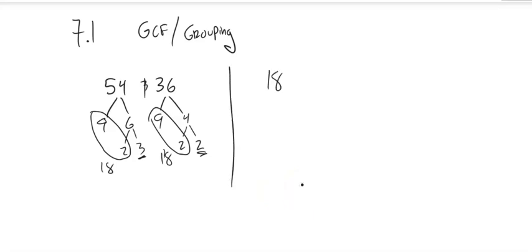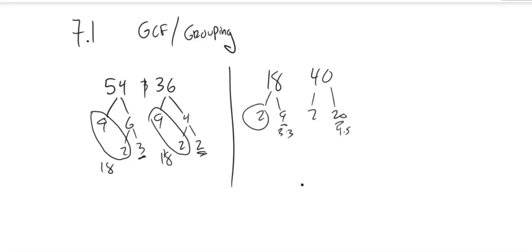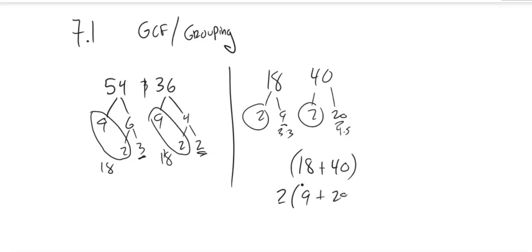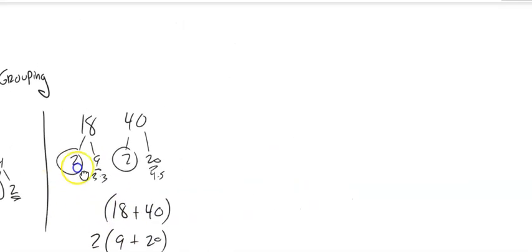You can do it again with numbers like 18 and 40. Two goes into both of those: two times nine and two times 20. Nine and 20 — this is three times three and this is four times five. I'm not going to get anything common out of those. So it looks like two is my greatest common factor for 18 and 40. The way to think about this that I'm going to extend to variables: if I had 18 plus 40, I could write that as two times nine plus 20, which gives me the same answer.